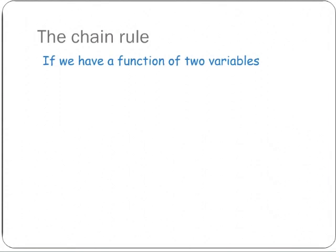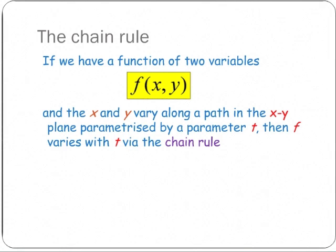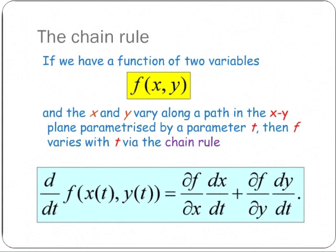The chain rule for partial differentiation is: if we have a function of two variables, f is f of x and y, and x and y vary along a path in the xy plane parametrized by a parameter t, then f varies with t via the chain rule. d by dt of f(x(t), y(t)) is df dx · dx dt plus df dy · dy dt, where we have to evaluate df dx and df dy at x of t and y of t, so the final answer should all be in terms of t.